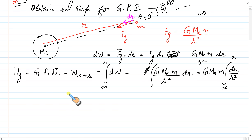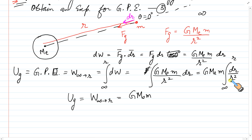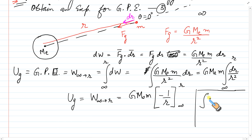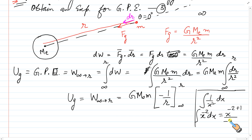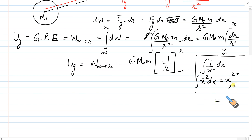Gravitational potential energy = G·Me·m · ∫(1/r²) dr from infinity to r. Rough میں دیکھتے ہیں: ∫ x⁻² dx = x^(−2+1)/(−2+1) = x⁻¹/(−1) = −1/x. So ∫ 1/r² dr = −1/r.